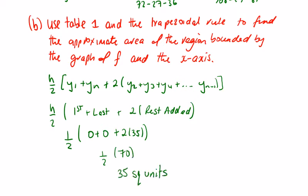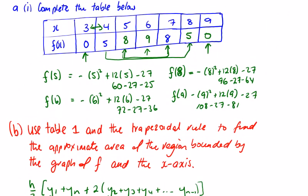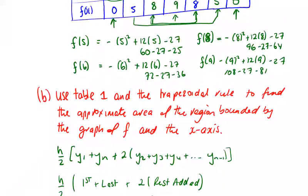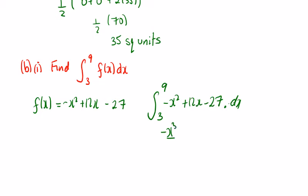In part 3, we're asked to find the integral of f(x) dx between 9 and 3, basically what we were dealing with from the start. f(x) is minus x squared plus 12x minus 27, so it's just your basic integration. We're integrating between 9 and 3, minus x squared plus 12x minus 27 dx.